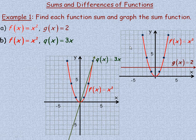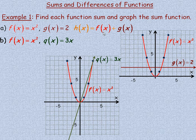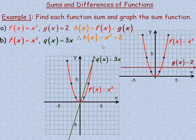Now we're going to add these two functions — f of x equals x squared and g of x equals 2 — together and call it h of x. So h of x is the sum of f of x and g of x, and algebraically h of x is x squared plus 2. Those are unlike terms so that's as much as we can simplify that function.